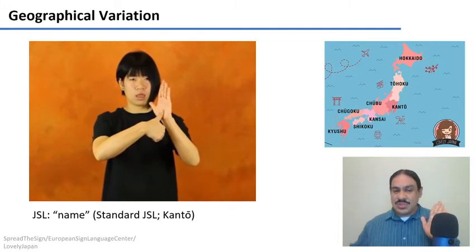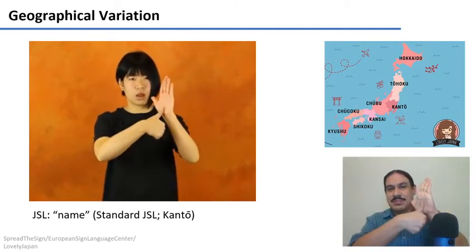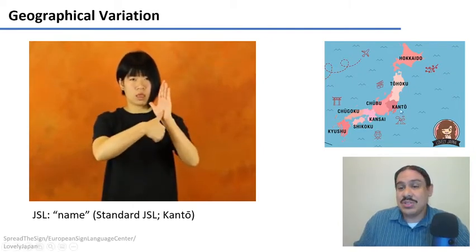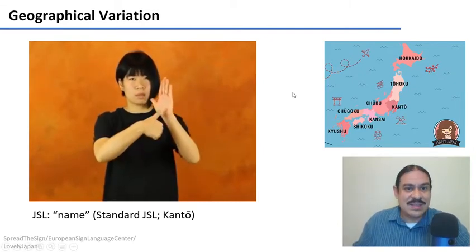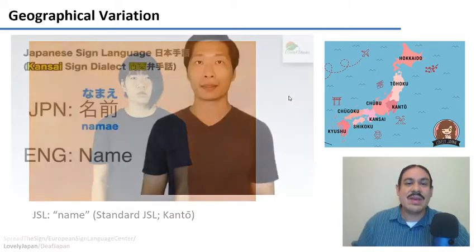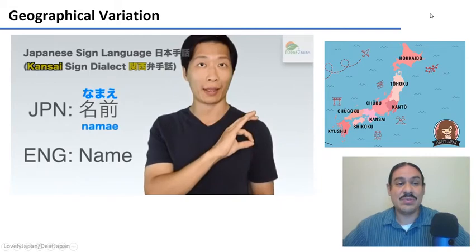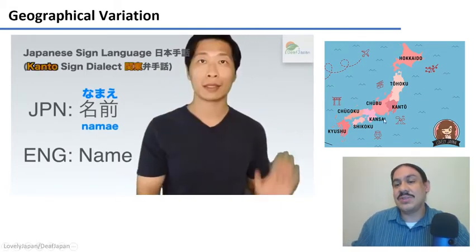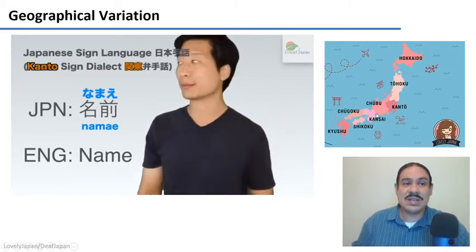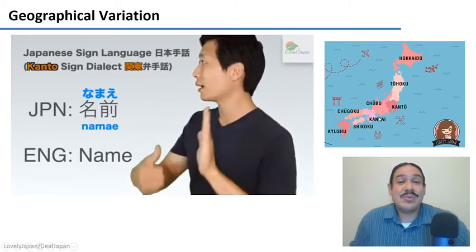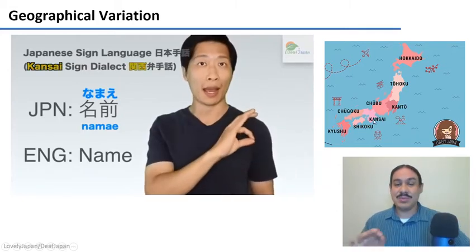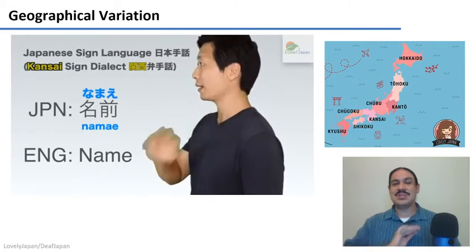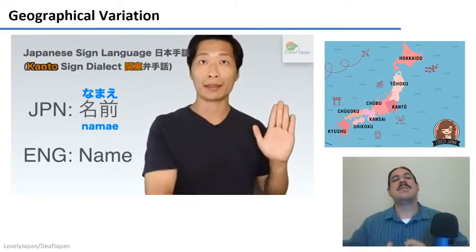This is a word from Japanese Sign Language — the word 'name.' The standard version of Japanese Sign Language is based on the Kanto region, where the city of Tokyo is, so that became the standard version. However, there are other versions of the word. The one you're seeing here is the word for the Kansai region, which is further south. Kansai has big cities like Osaka, so they have their own dialect and their own sign for 'name,' as opposed to the one used in Tokyo.